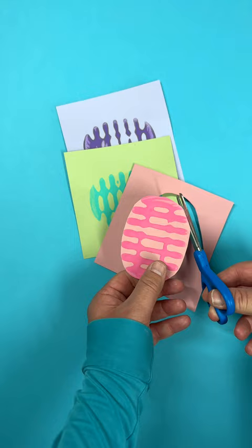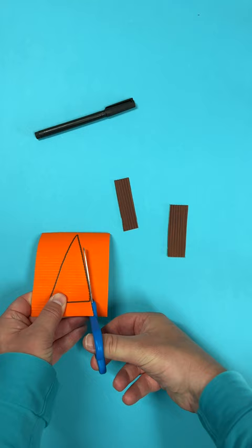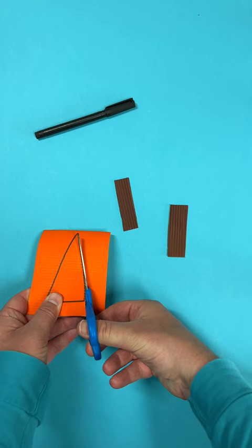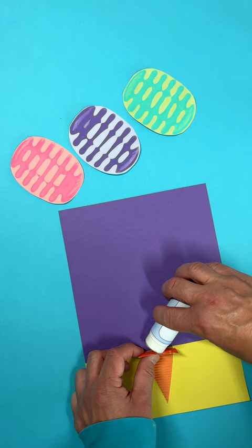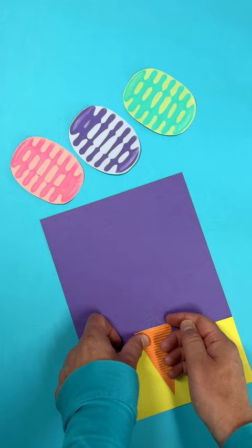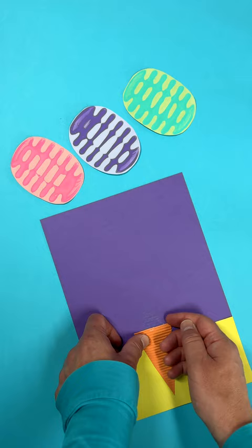Carefully cut out the masher print shapes and make a background for your picture. Cut out a card rectangle and triangle for your ice cream cone parts. Glue everything onto your background, layer up your ice cream masher prints, and then decorate with a cardboard chocolate stick and pom-pom cherry.